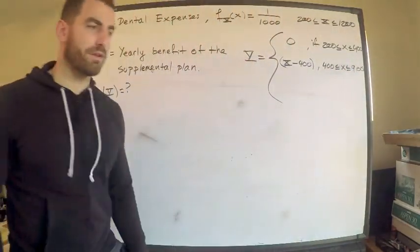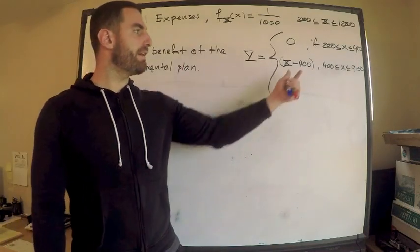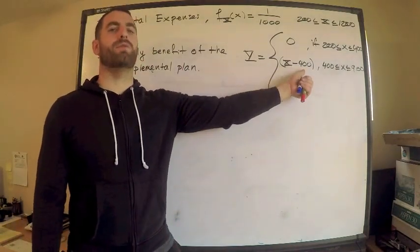They're not paying, the maximum payment of the supplementary plan is 500. How do I get 500 if x is 900? 900 minus 400 is 500.